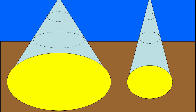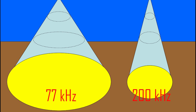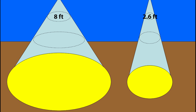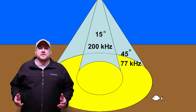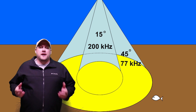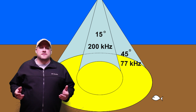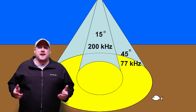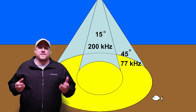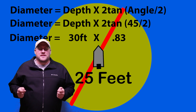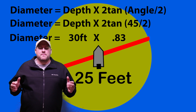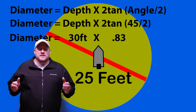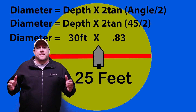Now we'll look at a side-by-side comparison of the 77k hertz frequency and 200k hertz frequency and their coverage areas for 10, 20, and 30 feet of water. We've discussed the differences between the 77k hertz and the 200k hertz frequency and the differences in the cone of view that each one provides. We've also talked about the advantages and disadvantages of each frequency range, and I showed you how to calculate the actual diameter that your sonar is picking up for surrounding terrain and fish.